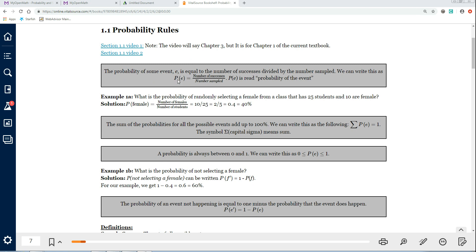We can write this as the probability of an event, see this right here, the capital P with the parentheses around the E, is read the probability of an event is equal to the number of successes divided by the number sampled. Again, the probability with the parentheses around the E is read the probability of an event.